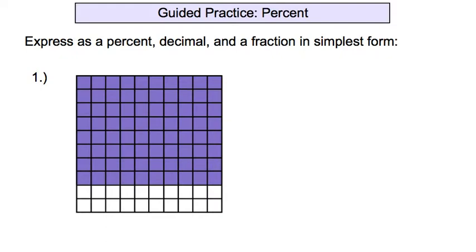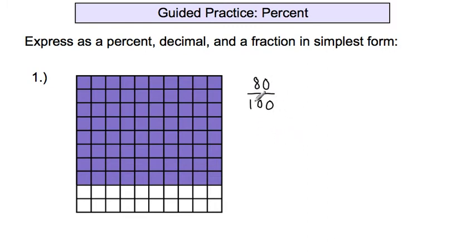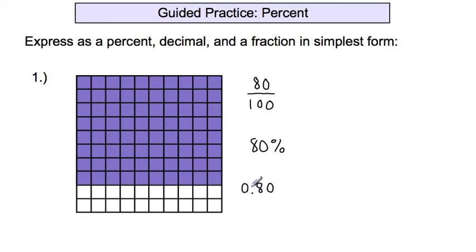Guided practice: express the shaded area as a percent, decimal, and fraction. Starting with the fraction — out of 100, there are eight rows of 10, making 80 shaded in. So 80 out of 100 is our fraction. That equals 80 percent, because percent means out of 100. For the decimal, the zero in 80 has to be in the hundredths place, so it's 0.80.